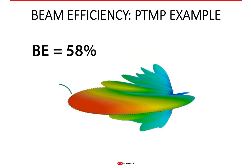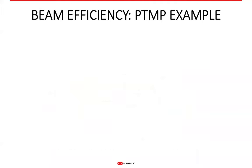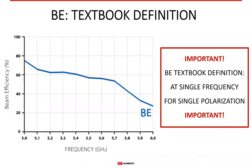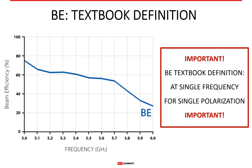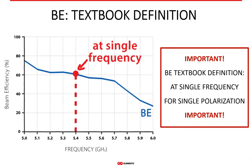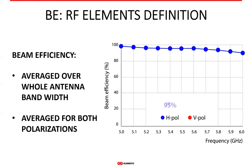Similarly with sector antennas: here you see an example of a patch or sector antenna with beam efficiency of 58%, meaning 42% of the energy it radiates is in the side lobes. WISPs use a wide chunk of spectrum, but in antenna textbooks, beam efficiency is actually defined at a single frequency and for a single polarization. It is up to the user and manufacturers to consider whether one should care about the whole bandwidth or just a single frequency point.